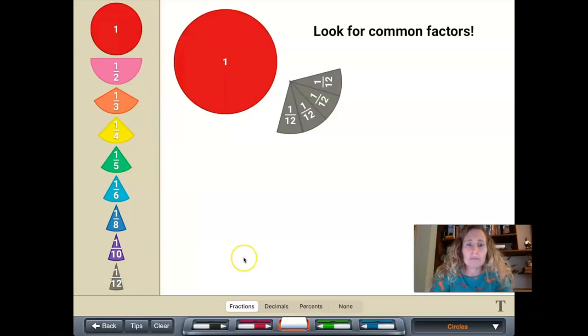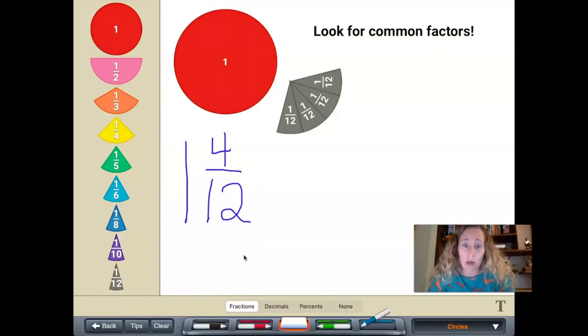So as you look here at this little mixed number that we've created, this mixed number is one whole and one, two, three, four twelfths. That's a beautiful fraction. However, it can be simplified. Four and twelve have common factors.